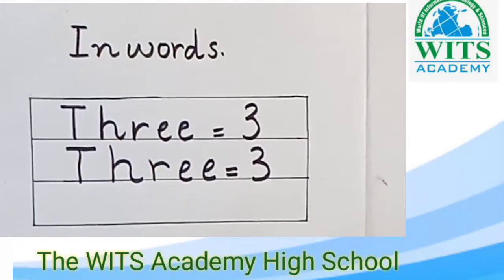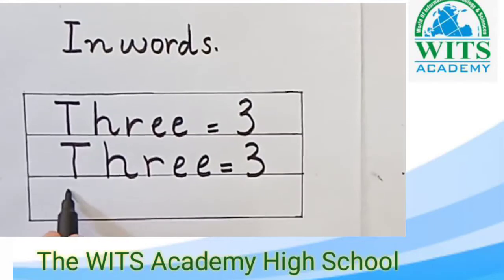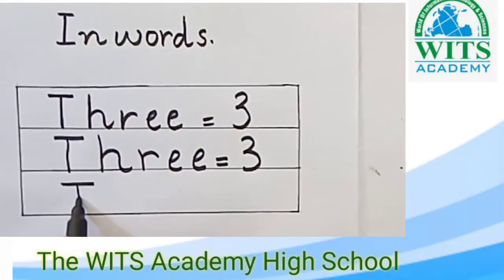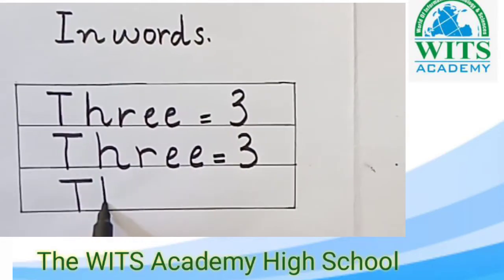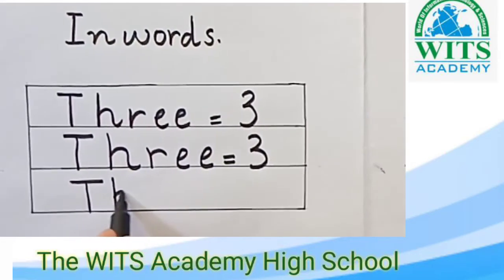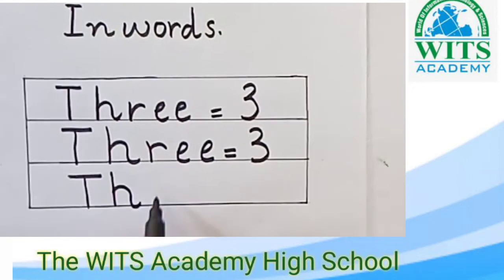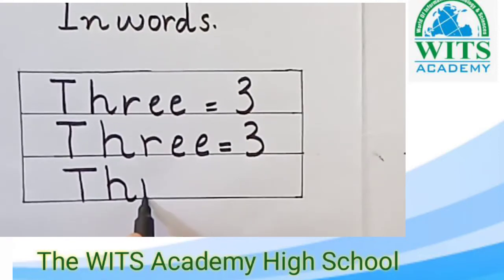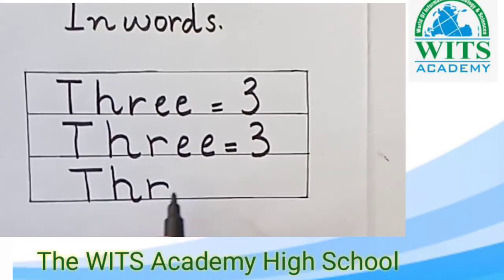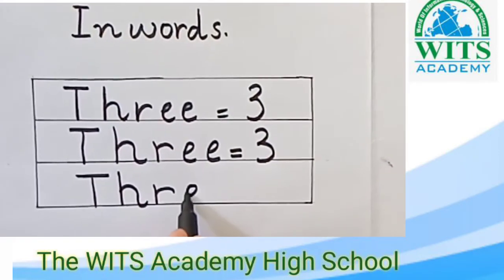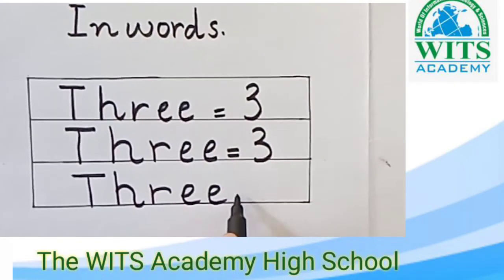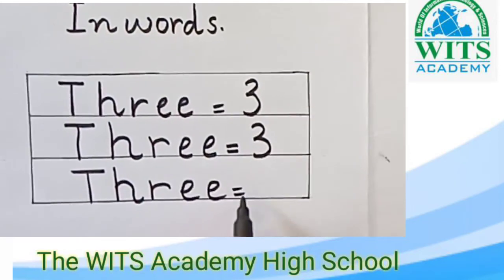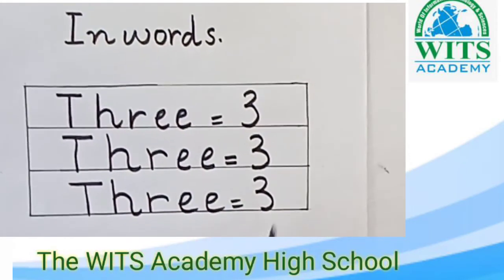Now again we are writing the spelling of 3: T, H, R, E, E. That spells 3.